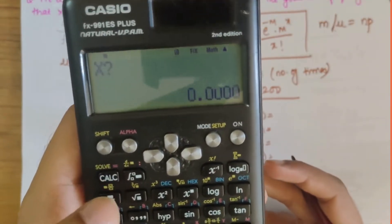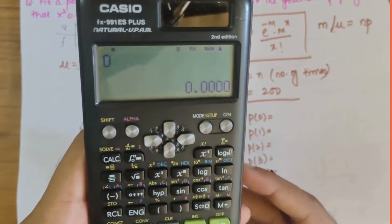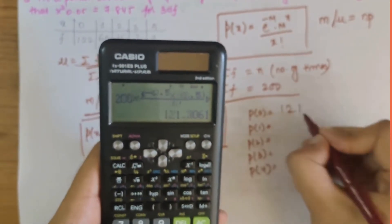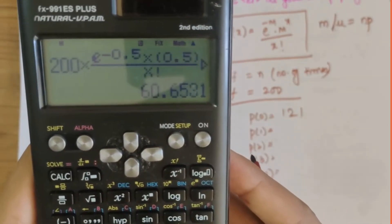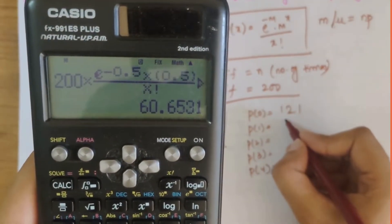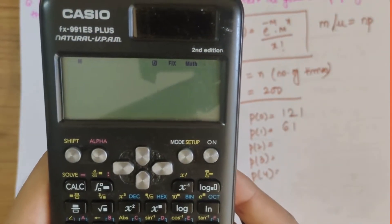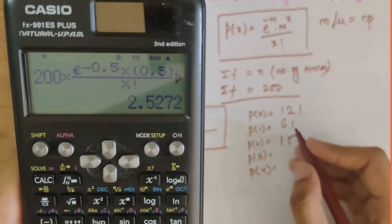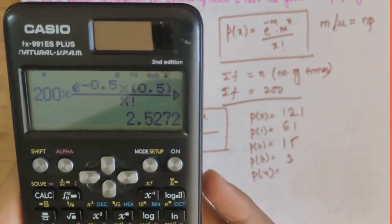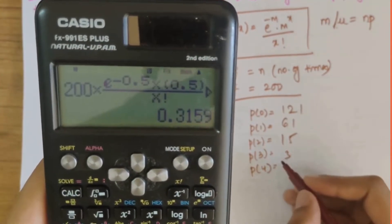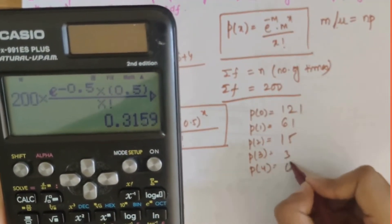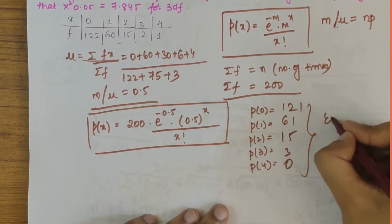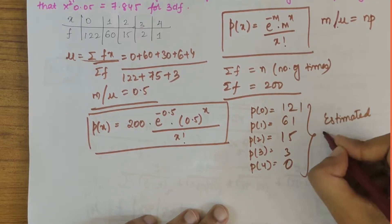I have put the entire equation in the calculator and now I'll be solving it. For x equals 0 we get the answer as 121. For x equals 1 we get 60.65, let's approximate it to 61. For x equals 2 we get 15.16, that is 15. For x equals 3 we get 2.52, approximate it as 3. And for x equals 4 we get 0.31, let's take it as 0 only. These are the estimated frequencies which we have obtained.